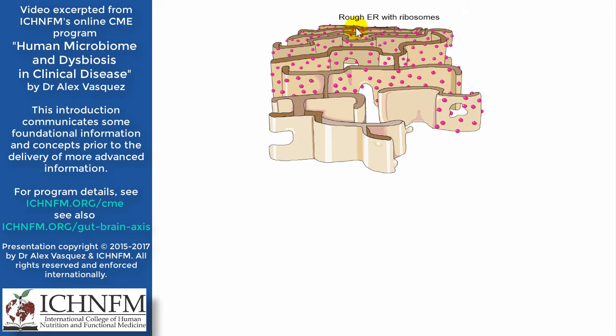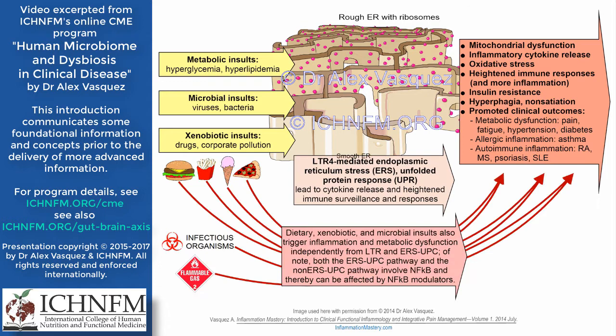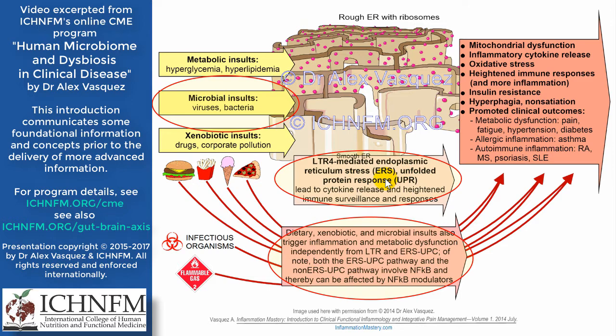Here I'll show you a separate model related to mitochondrial dysfunction: endoplasmic reticulum stress and the unfolded protein response. A variety of metabolic insults such as hyperglycemia, microbial insults from viruses and bacteria, and xenobiotic insults from drugs or corporate pollution can all trigger endoplasmic reticulum stress. That then triggers the unfolded protein response — a very non-specific pro-inflammatory response — contributing to disorders including mitochondrial dysfunction, low-grade sustained inflammation, oxidative stress, pro-inflammatory response, insulin resistance, hyperphagia, and non-satiation.